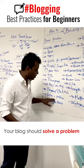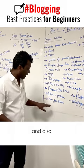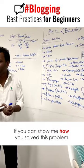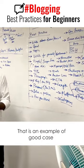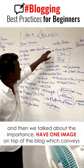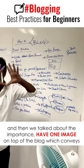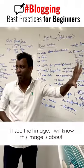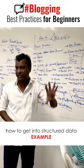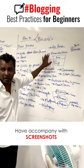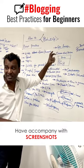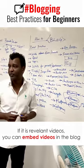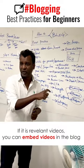Your blog should solve a problem, and if you can show how you solved the problem, that is a good case study example. Have one image on top that conveys the topic — for example, if I see an image I'll know it's about structured data. Include company screenshots, pictures, and embed relevant videos if applicable.